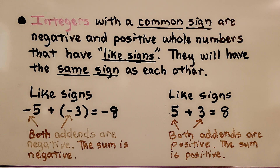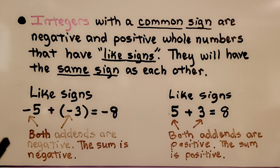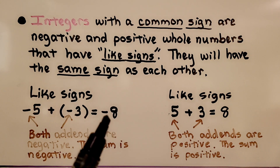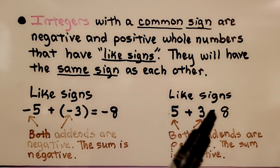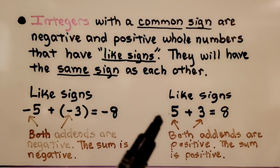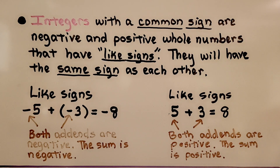Here we have like signs: a negative 5 being added to a negative 3. Both addends are negative, so the sum is negative. Here we have another example with like signs — both addends are positive: a positive 5 and a positive 3, so the sum is positive.